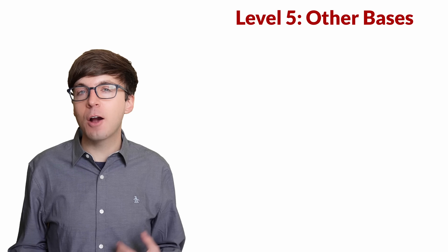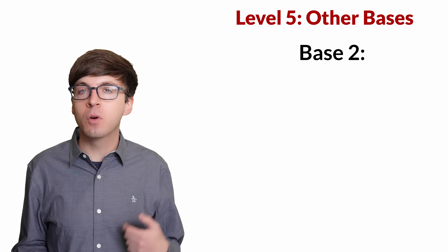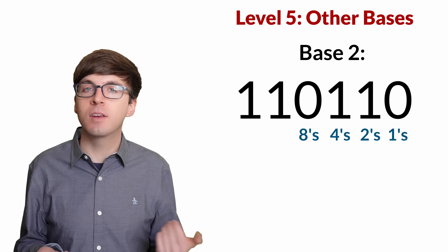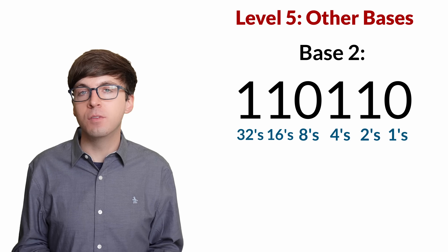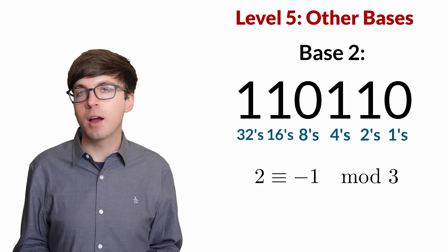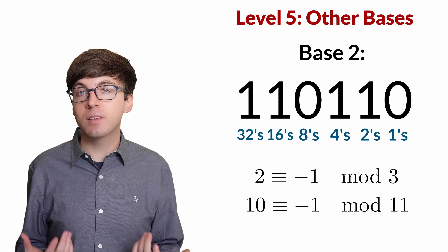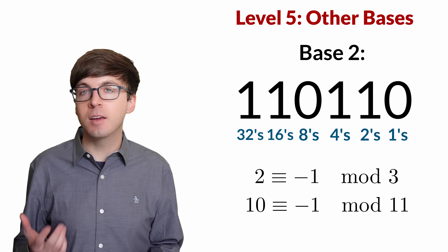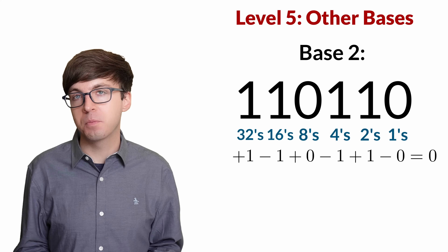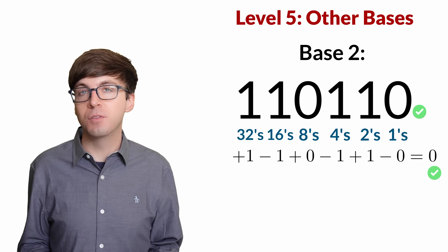For level 5, let's see how you can create divisibility tricks for bases other than 10. As a first example, say we have the binary number 110110. From right to left, the digits are in the 1s, 2s, 4s, 8s, and 16s places. Say we want to find a divisibility trick for 3. Since 2 is congruent to negative 1 modulo 3 — it's 1 shy of 3 — this is just like the situation with dividing by 11 in base 10. We use the same rule of alternating adding and subtracting the digits: plus 1 minus 1, plus 0 minus 1, plus 1 minus 0, which is 0. This is divisible by 3, so the binary number 110110 is divisible by 3.